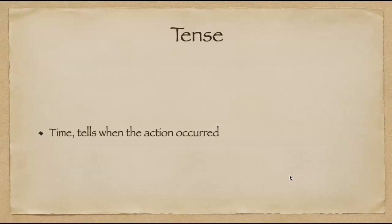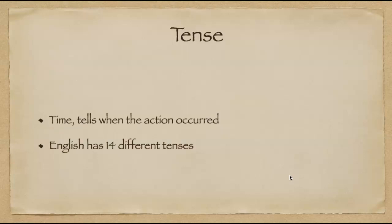Last we have tense. Tense is time. It tells us when the action occurred. Now there are three divisions in time. We have what's happening right now. We have what's happened in the past and we have what's yet to come. However, in the English language, we have 14 different tenses that are spread out throughout those three divisions of time.